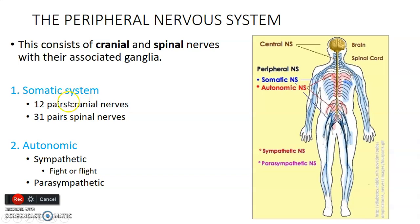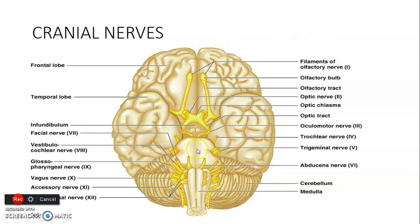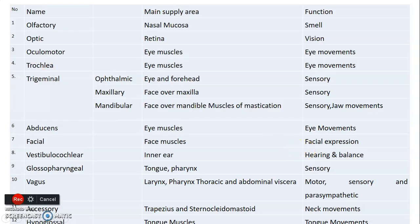The peripheral nervous system is made up of cranial and spinal nerves and is divided into somatic — with 12 cranial nerve pairs and 31 pairs of spinal nerves — and the autonomic nervous system. Sympathetic is for fight-or-flight. There are 12 cranial nerves located at the base of the brain: olfactory, optic, oculomotor, trochlear, trigeminal, abducens, facial, vestibulocochlear (number eight), glossopharyngeal, vagus, accessory, and hypoglossal (number 12). You need to know the functions of each — there will be a lecture on each of the 12 cranial nerves.